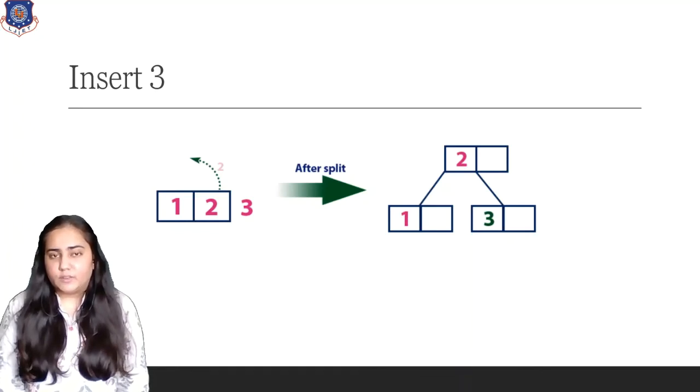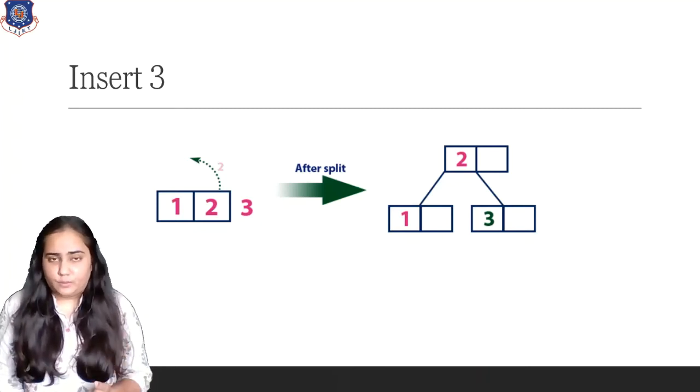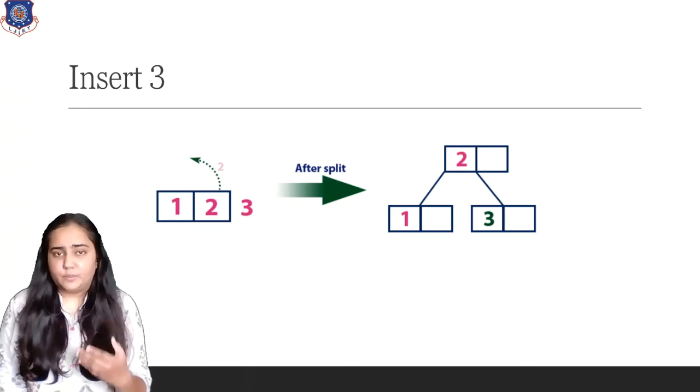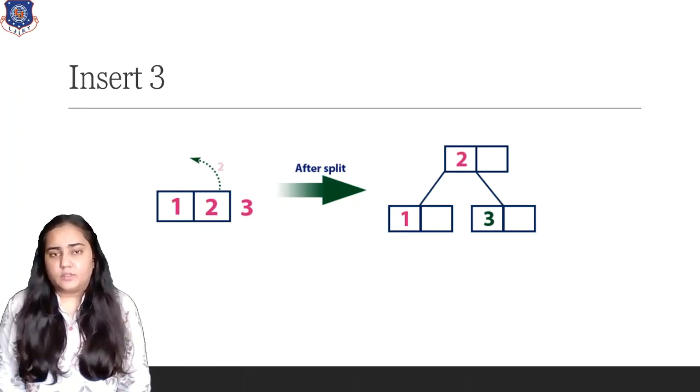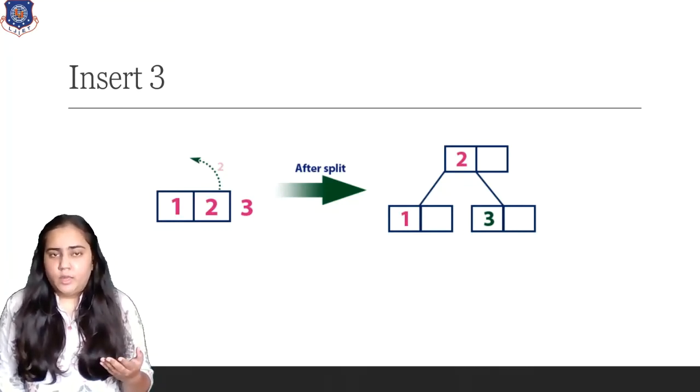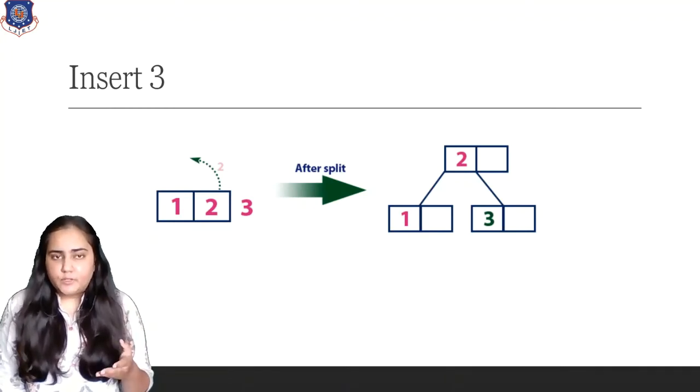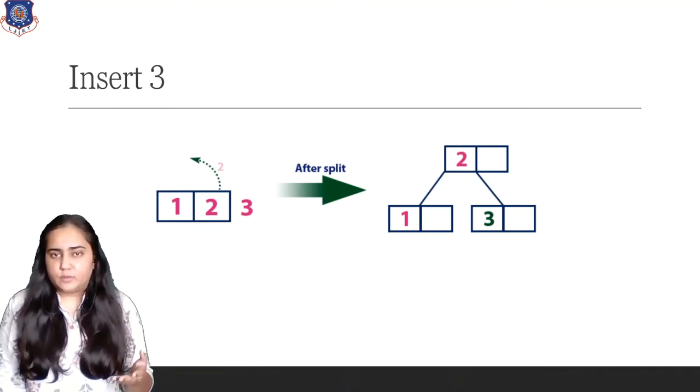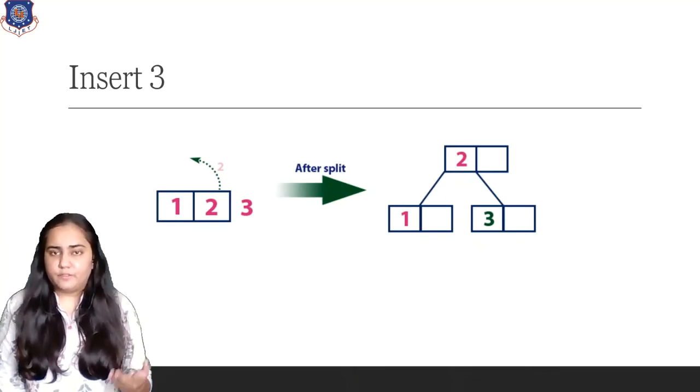Now consider inserting 3. What happens then? I do not have space for 3. So I will put it in sorted order and pick the middle most node, which is 2, and move it up a level. Remember that B-tree always grows upwards. It does not grow downwards. We never create levels below, we always create levels above. So there is 1, 2, 3. I'm going to pick 2 because it's the middle most and take it up. On the left side of 2, there will be 1. On the right side of 2, there will be 3.